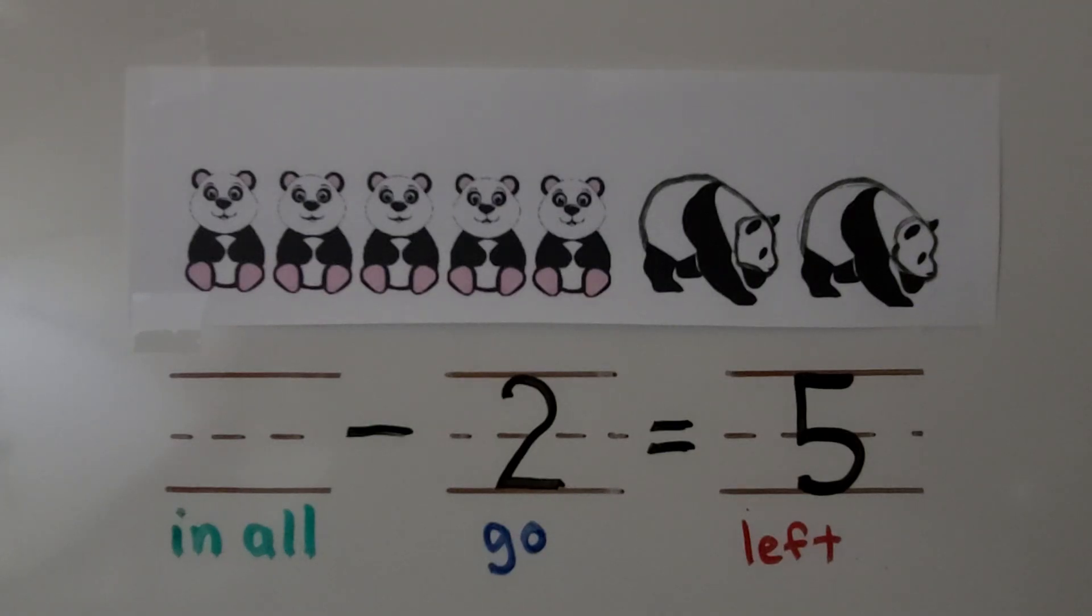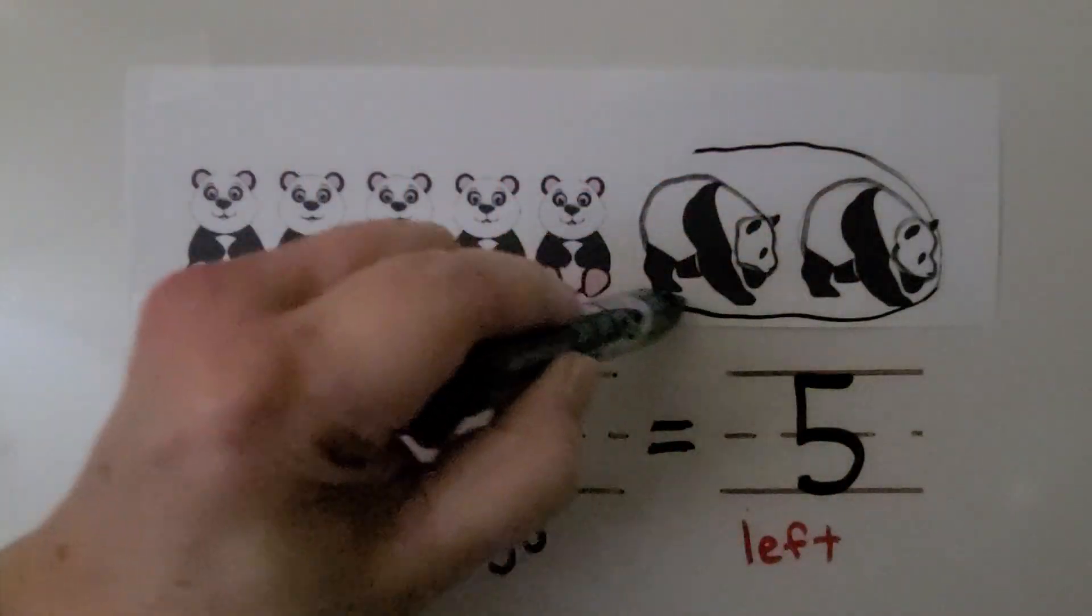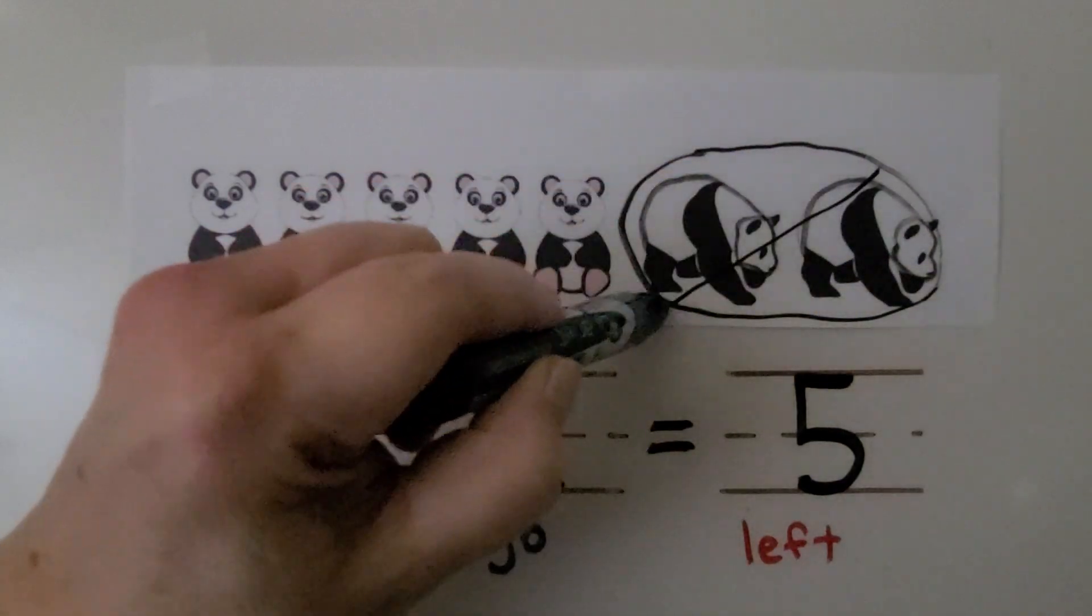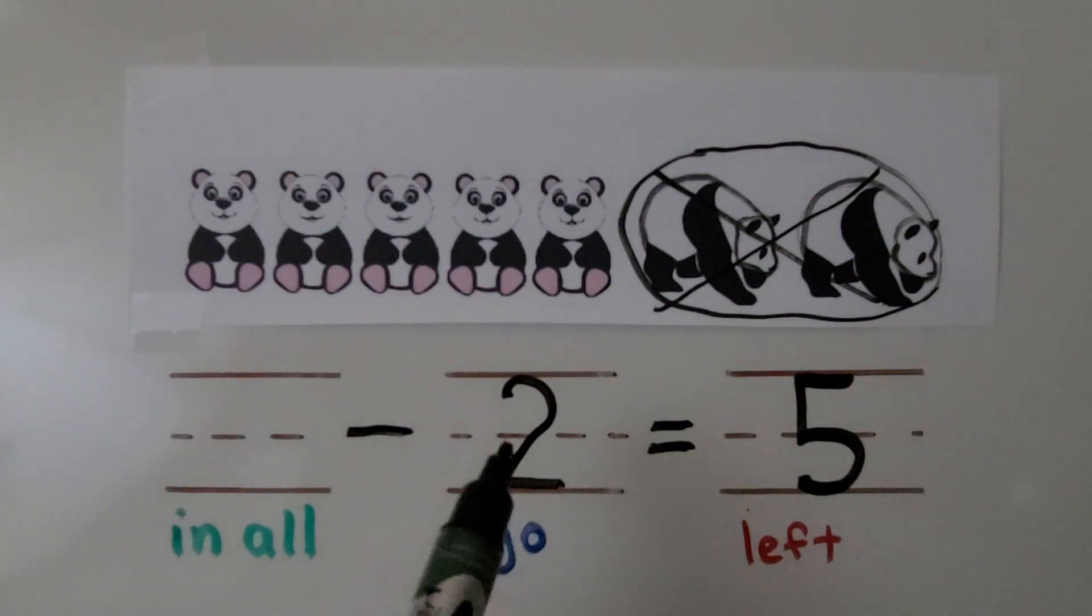Now listen to this carefully. There are some pandas. Two walk away. Now there are five left. How many pandas are taken from the set? We know two walk away. We can circle the two. We can cross them out because they're walking away. We're taking two from the set.